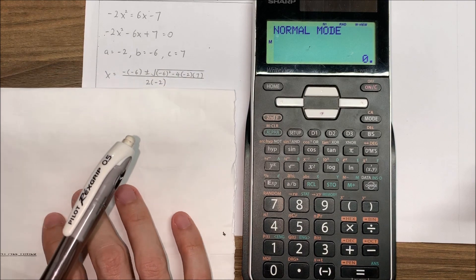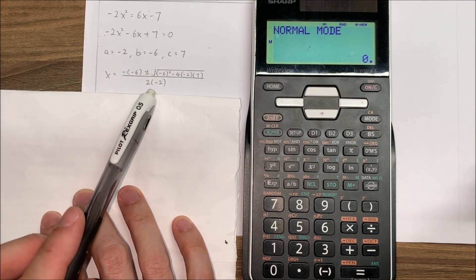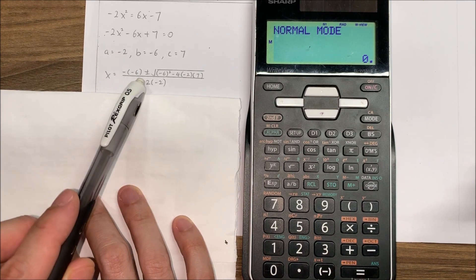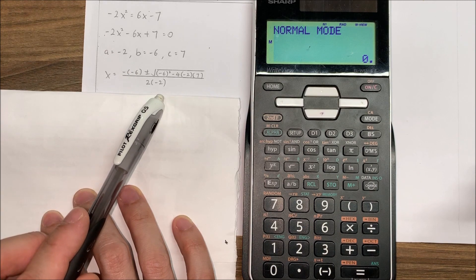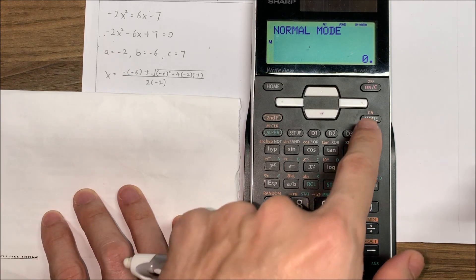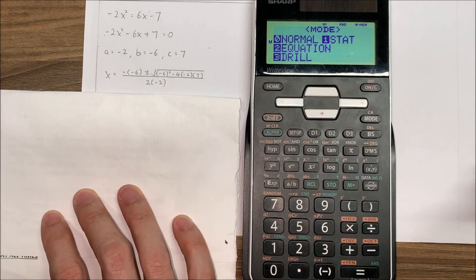And as usual, I'm going to write down the quadratic equation, x equal to the equation. And I'm going to substitute the a, b, and c. And then I'm going to use the calculator. So in this case, same thing, I'm going to press mode.